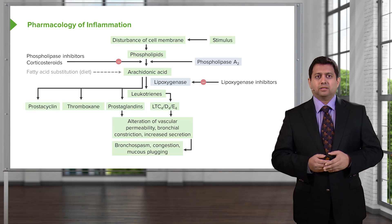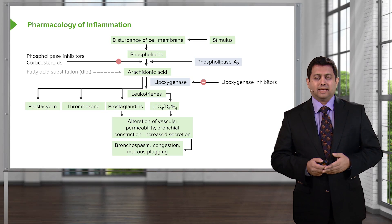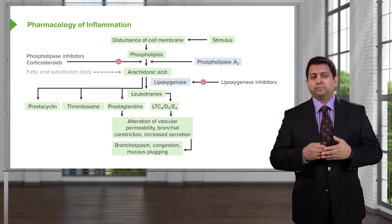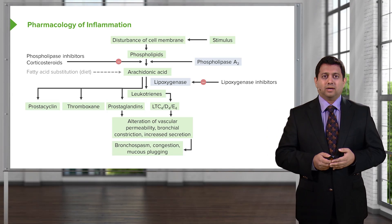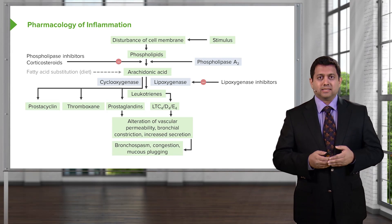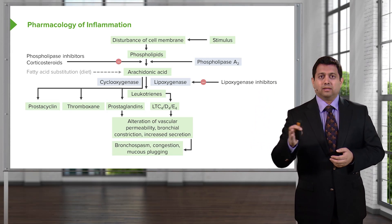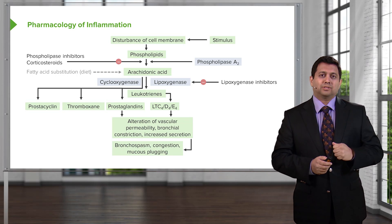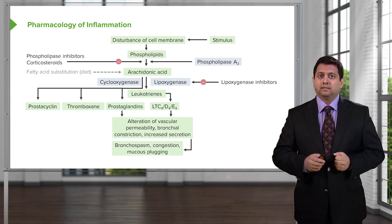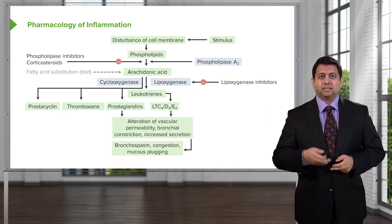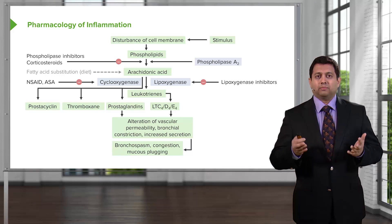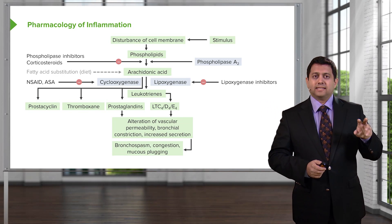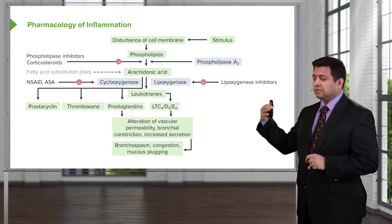Other things derived from arachidonic acid include prostacyclin, thromboxane, and the prostaglandins. The prostaglandins and leukotrienes are kind of two sides of a seesaw. Cyclooxygenase is the enzyme that takes arachidonic acid and turns it into prostacyclin, thromboxane, or prostaglandin — but not leukotrienes. Lipoxygenase turns arachidonic acid into leukotrienes. The stop point for cyclooxygenase is aspirin — aspirin is a cyclooxygenase inhibitor, and that's how it works to reduce inflammation by preventing the formation of those three agents.